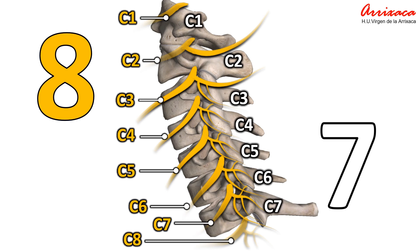Seven cervical vertebrae, labeled from C1 to C7, form the cervical spine from the base of the skull down to the top of the shoulders. Eight pairs of spinal nerves exit through the foramen between every pair of vertebrae in the cervical spine, labeled C1 through C8. It is the only area of the spine where there are more spinal nerves than vertebrae, because the spinal nerves of each vertebra originate from the immediately superior foramen.